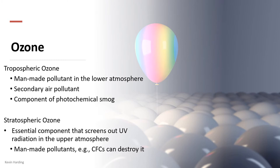There are two types of ozone: tropospheric ozone and stratospheric ozone. Tropospheric ozone is a man-made pollutant in the lower atmosphere — it is a secondary air pollutant and forms a component of photochemical smog seen over many cities. Stratospheric ozone is in the upper atmosphere and screens out ultraviolet radiation.